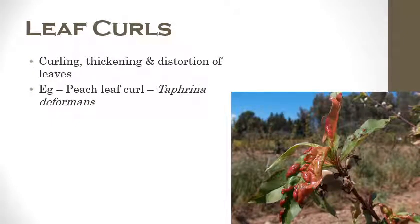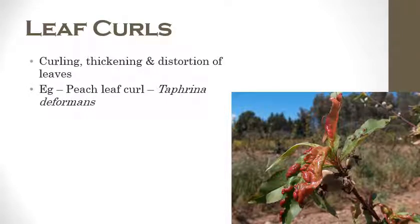The next one is leaf curl. The name indicates curling of leaves — the leaves are curled, thickened, and distorted, either upwards or downwards. The example is peach leaf curl which is caused by Taphrina deformans. These are the general and important symptoms produced by fungal pathogens.